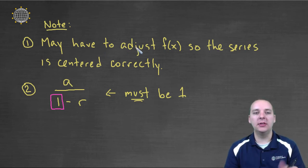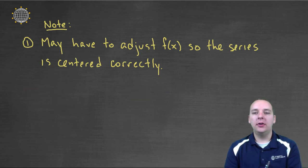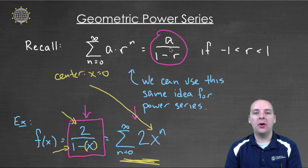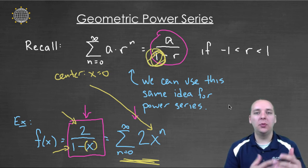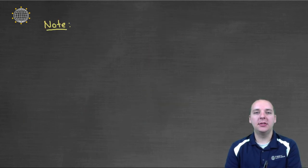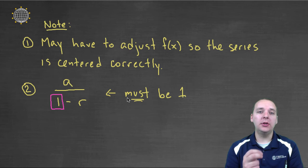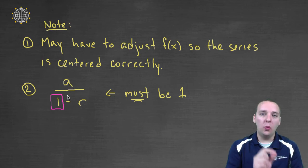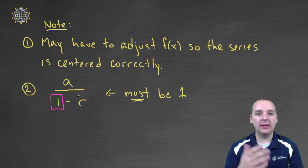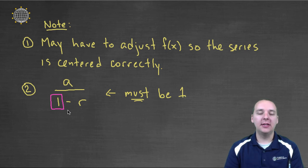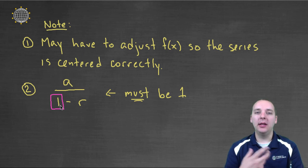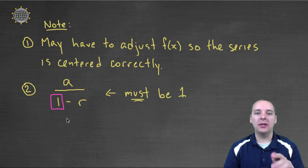The other issue: when you change things around and shift where it's centered, the a over one minus r form can get messed up — the one might turn into a five or a two. That's actually a big deal and messes up quite a lot. You have to make sure it stays a over one minus r. The a can be any constant and the r can be any function of x, but this one has to stay one. So we'll need another example where we practice keeping that term of one intact.